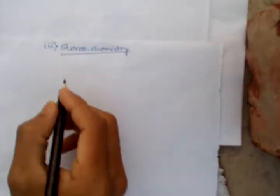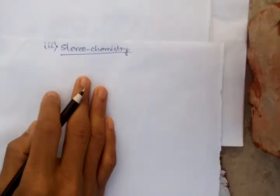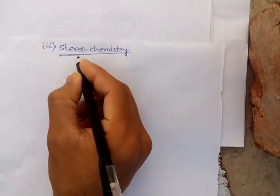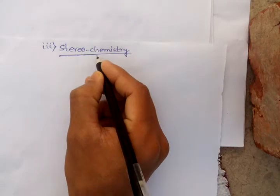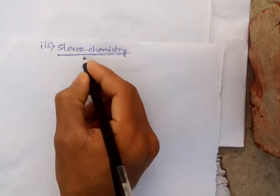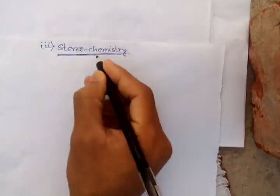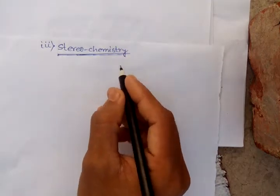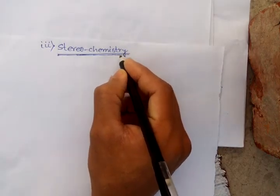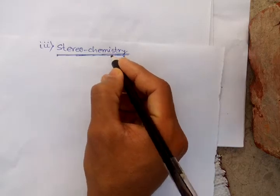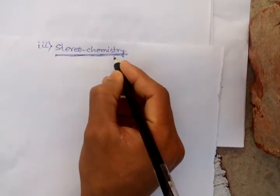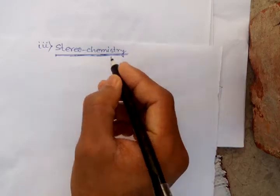Hello friends. Now I will discuss about the third criteria of product selectivity in the Diels-Alder reaction, that is stereochemistry. It is a very simple topic as well as a scoring topic, and this is very important for JAM and CSIR NET.